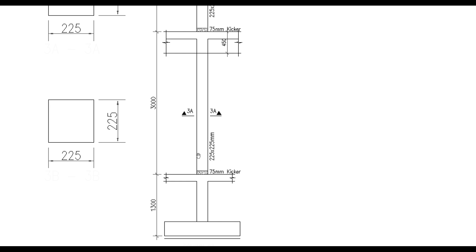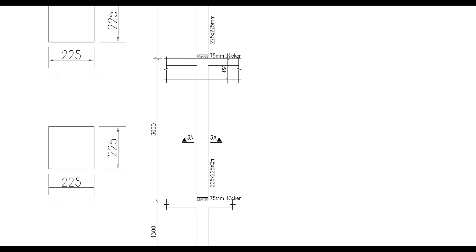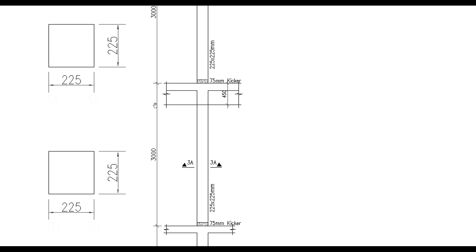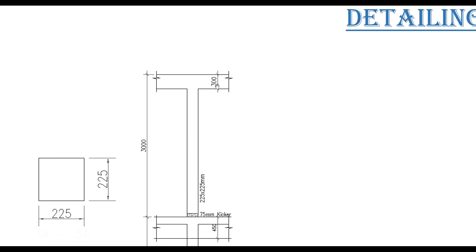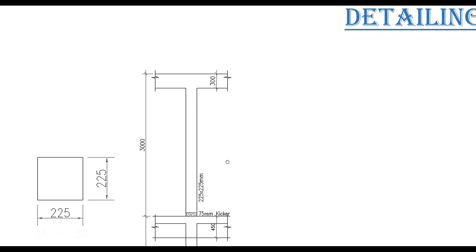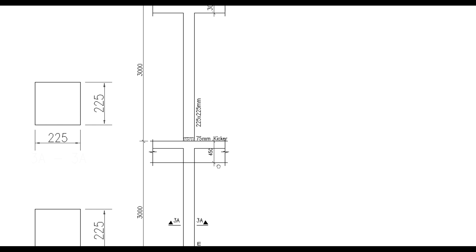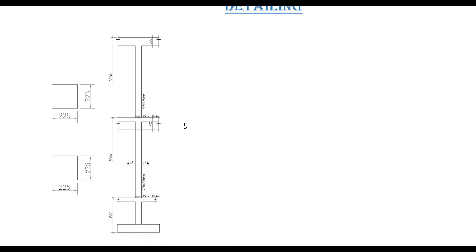The column size is 225mm by 225mm. From the blinding concrete to the top of the concrete slab is 3 meters. You also have the beam sections — the roof beam is 300mm in depth and the floor beam is 450mm in depth. After each floor you must always have a concrete kicker, and the commonly used size is 75mm.